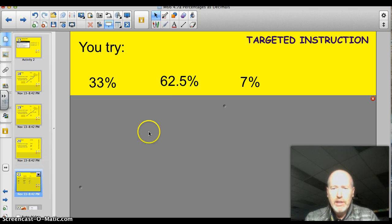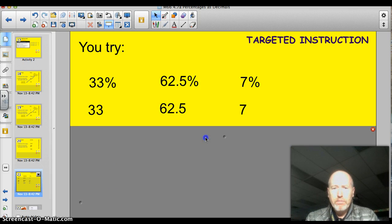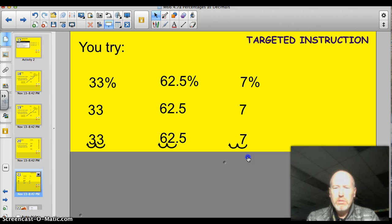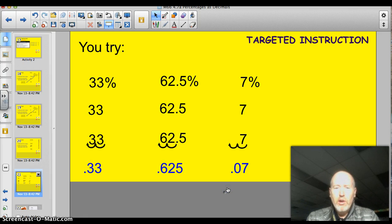Alright, let's see how you did. Here's step one for all of them. 33% becomes 33, 62.5, and 7. On step two, move the decimal two spots to the left. Notice that we're going to need a placeholder here, aren't we? You got it, Ace.